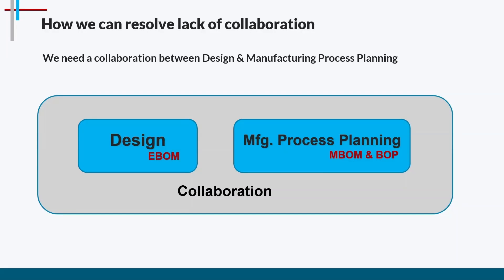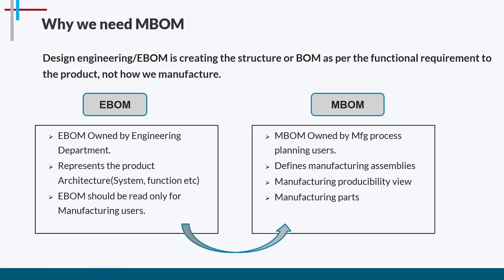To resolve the lack of collaboration, we need to bring the design department — which owns the engineering bill of material — and the manufacturing planning department — which manages the mBOM and bill of processes — into proper collaboration and communication. Regarding why we need the mBOM: the engineering eBOM creates the structure based on functional requirements of the product, not how it is manufactured. The mBOM defines how to manufacture, what to manufacture first, and the sequencing.